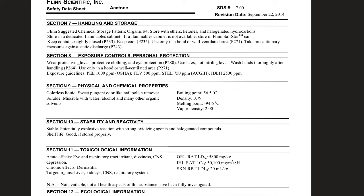Section eleven is toxicology information. It can acutely affect your eyes and respiratory tract if you breathe it in, cause dizziness, and cause CNS depression if you're around acetone too much. Chronic effects include dermatitis — that just means skin irritation, problems with your skin. Target organs include the liver, kidney, central nervous system, and respiratory system.